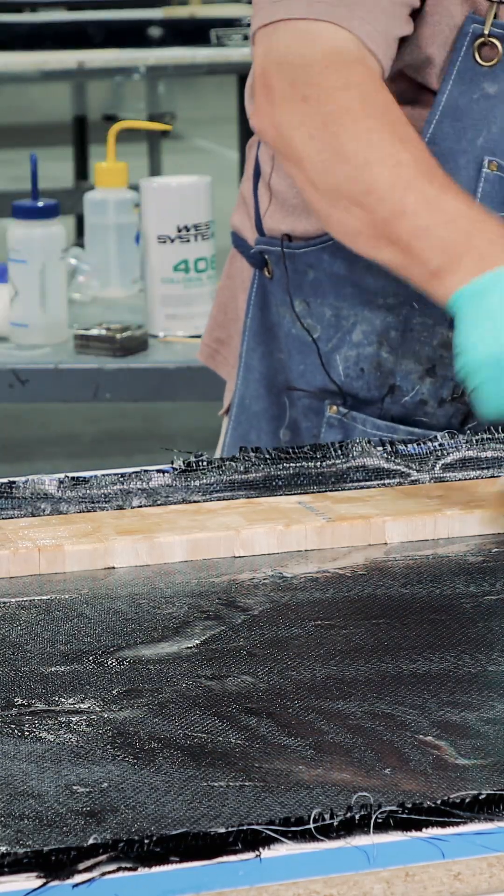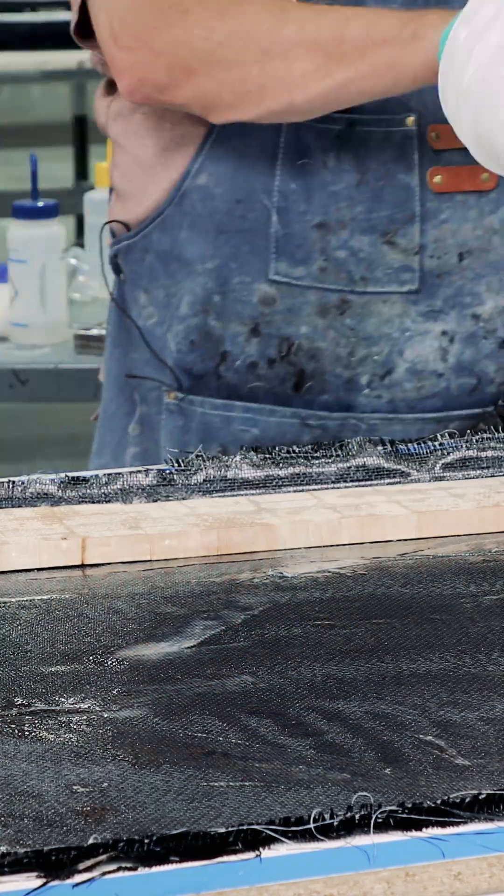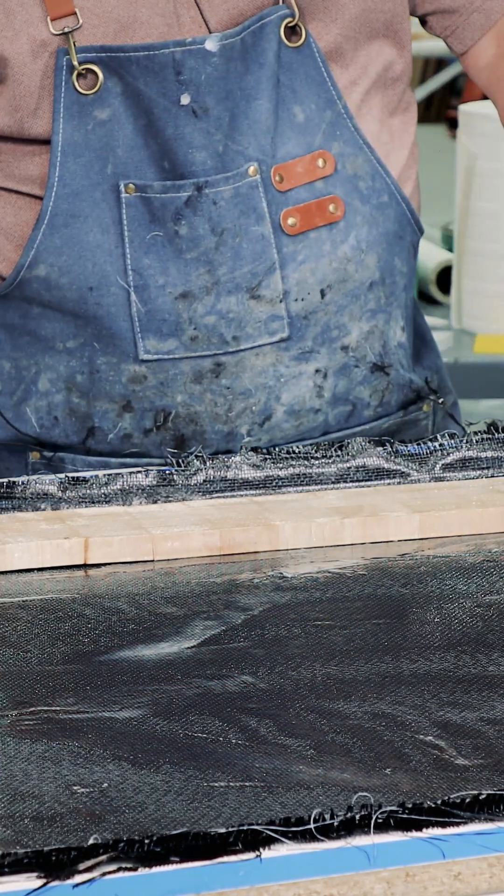It'll also stiffen it up some without adding a tremendous amount of weight. And then we also wet out both sides completely so that it doesn't pull resin out of the fabric.